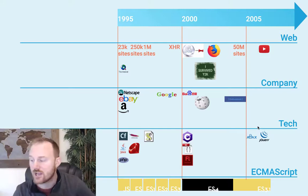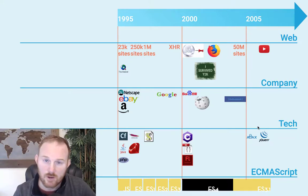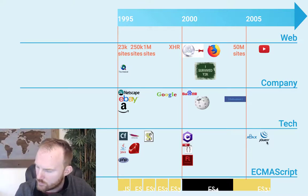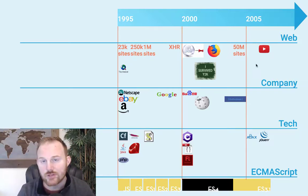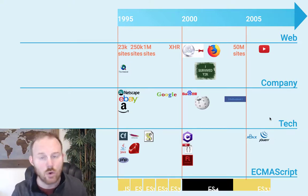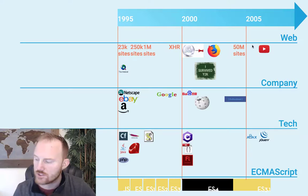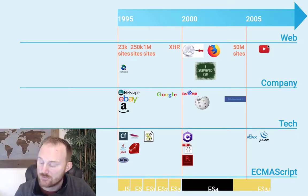YouTube is also purchased that year by Google, and I vividly remember thinking that is a really, really stupid purchase — no one is going to want to watch random videos by random people. We've got jQuery and YouTube, and this puts a lot more pressure on JavaScript: there's lots of incentive for developers to make cooler stuff for all web pages, and you've got YouTube where people are starting to stream — primarily in Flash at this point, but that's not going to last very long.